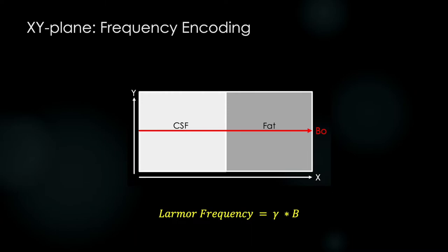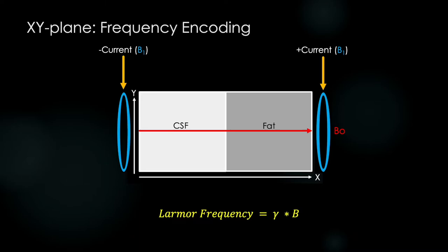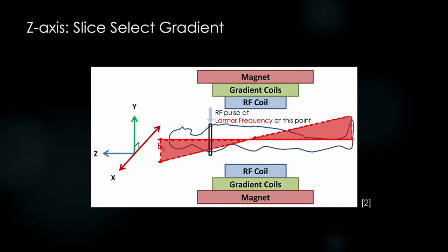What if we borrowed the idea we developed in the slice selection lecture, and place electromagnets on the far edges of the x-axis? Let's run a forward current through one coil and a reverse current through the other. How would this change the magnetic field the voxels experience? We'd get a linearly varying magnetic field from left to right along the x-axis. It's the same principle we developed for the slice selection method, but we've already excited the slice at this point.